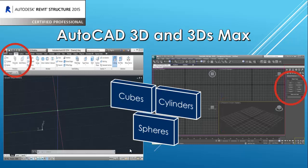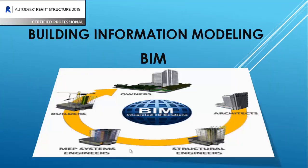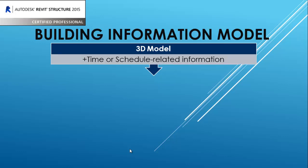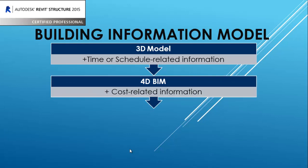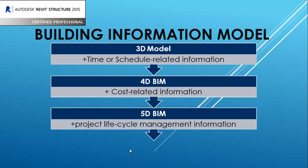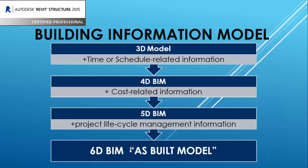Elements like cubes, cylinders, and spheres are 3D shapes used to build larger forms, but again, only the creator understands the purpose. Building Information Modeling uses a concept called the Building Information Model. A 3D model, when you add time and schedule-related information, becomes a 4D Building Information Model. When cost-related information is added, it becomes 5D BIM. Adding project lifecycle management information gives us 6D BIM, or the as-built model — and that is the main use of Revit.